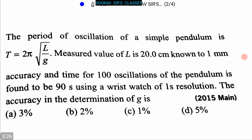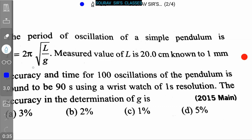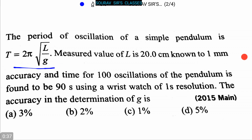Today we are discussing some questions on general physics. Our first question is: the period of oscillation of a simple pendulum is T = 2π√(l/g). The measured value of l is 20 centimeters known to one millimeter accuracy, and the time for 100 oscillations of the pendulum is found to be 90 seconds using a wristwatch of one second resolution.